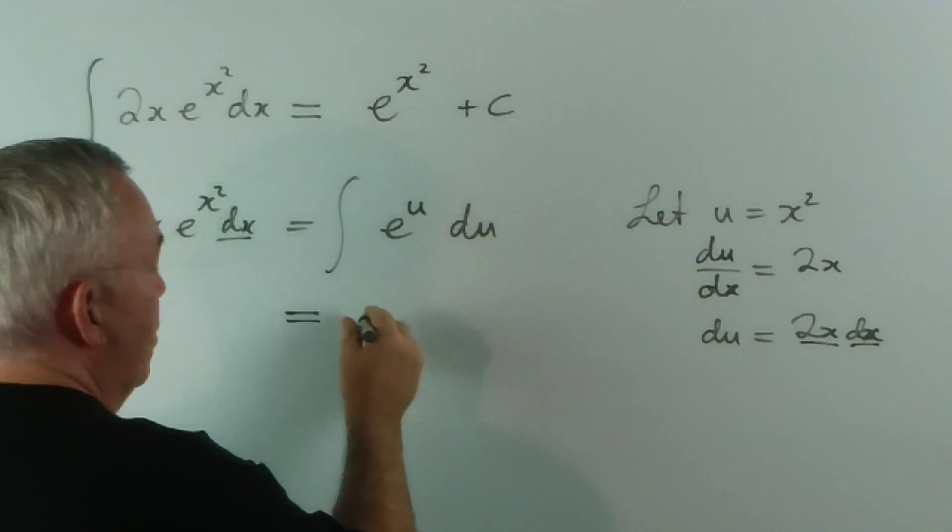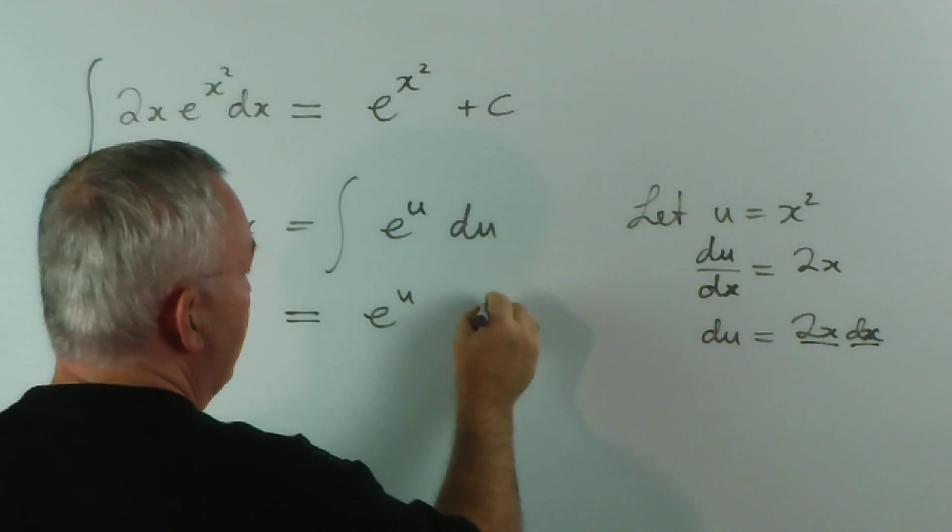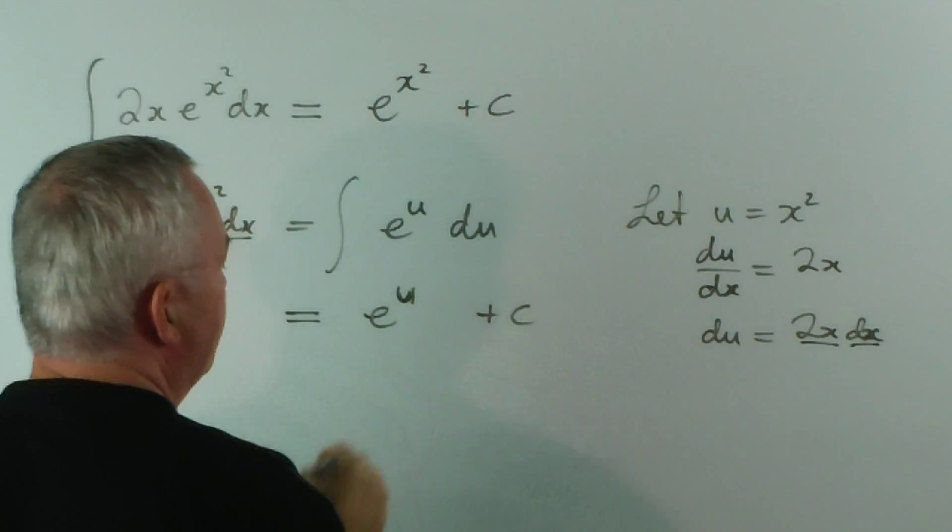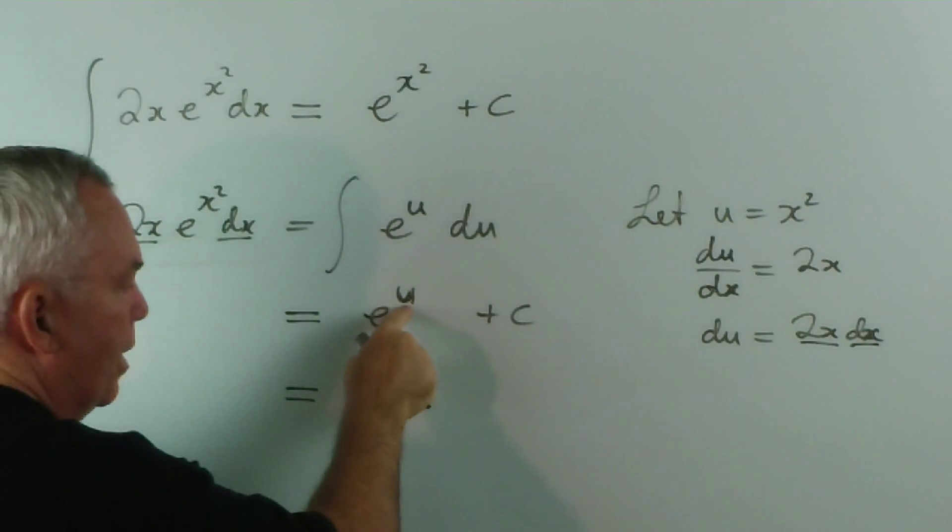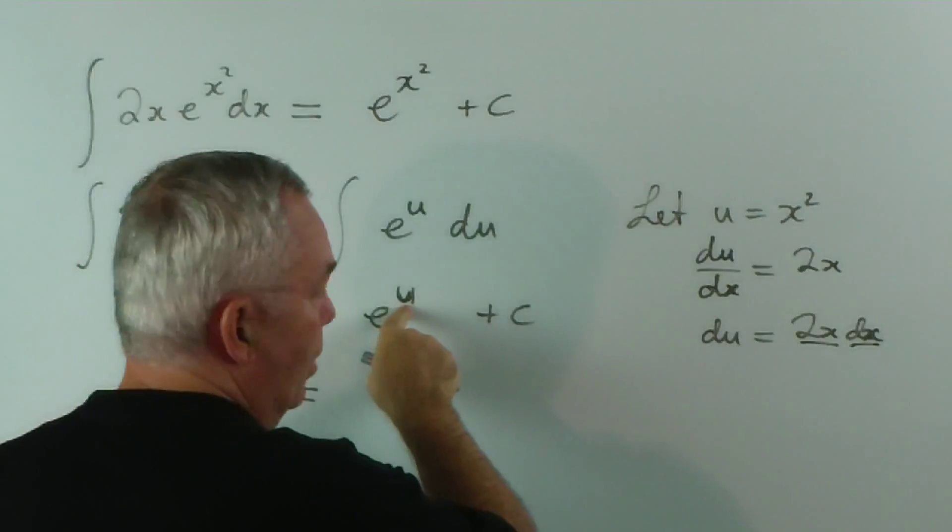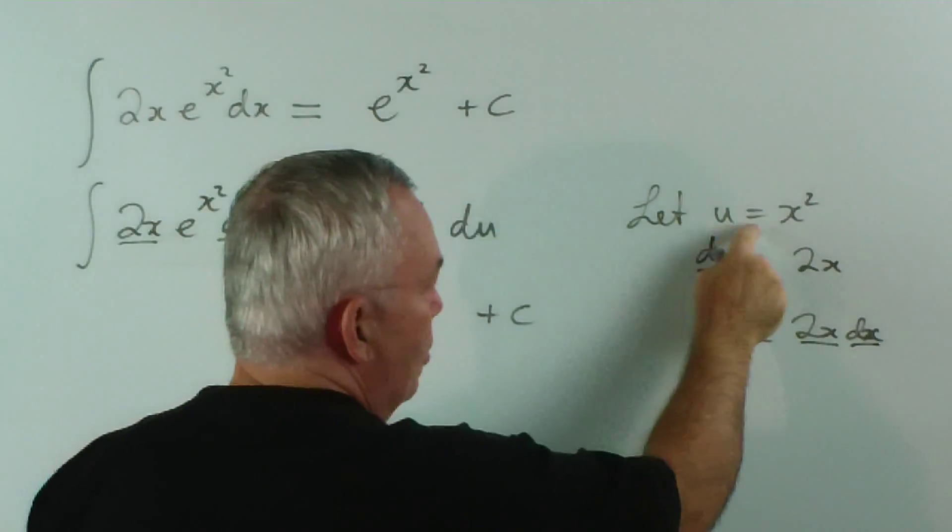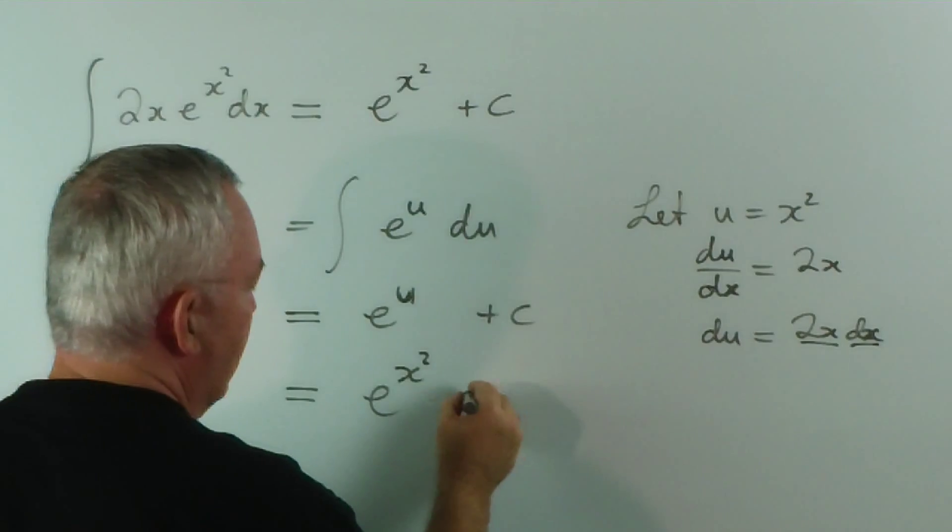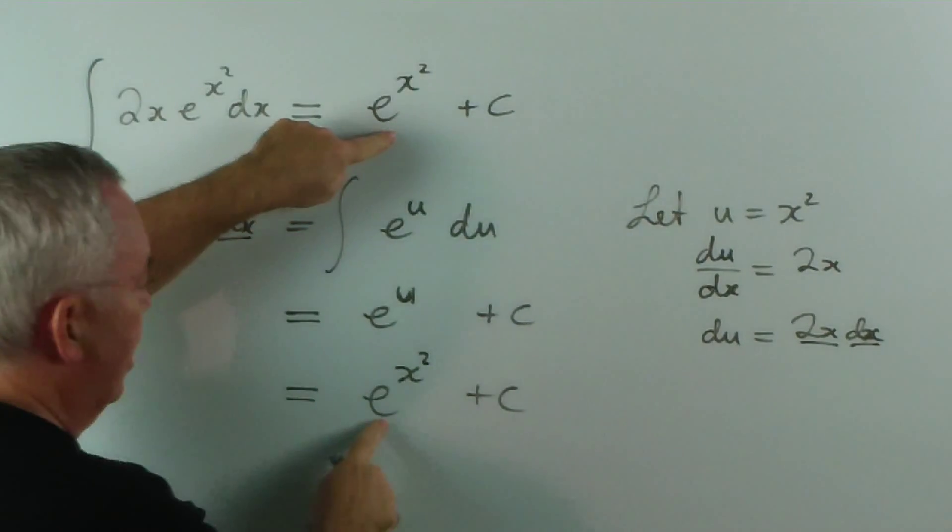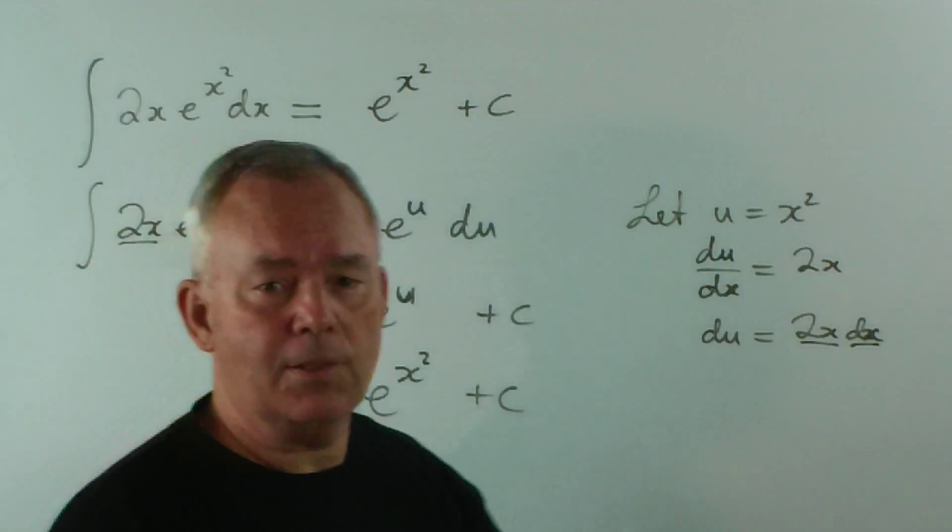Now, the integral of e to the u is simply e to the u plus c. And to get back to our original function, we just have to substitute whatever we had for u. u is worth x squared, so we write x squared plus c. And you can see it's the same result. Exactly the same result.